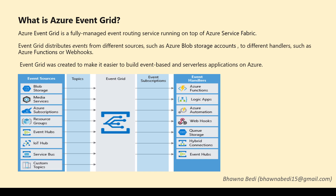Azure Event Grid is a fully managed event routing service on top of your Azure services. If you are trying to build any event-based application or a serverless application on Azure, the solution is Azure Event Grid. You can list any number of events — it is connected to almost every resource in Azure: Blob Storage, Azure subscription, resource groups, IoT — and then you can perform actions based on those events.